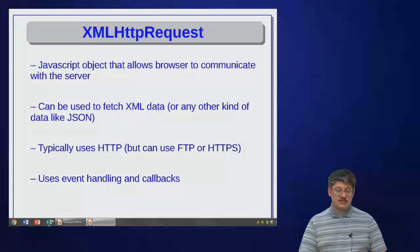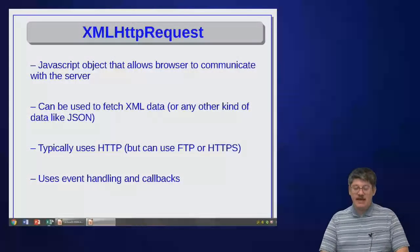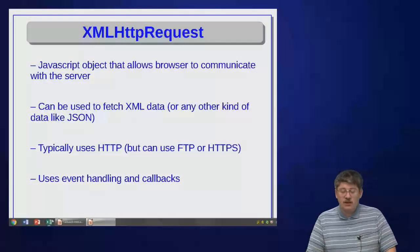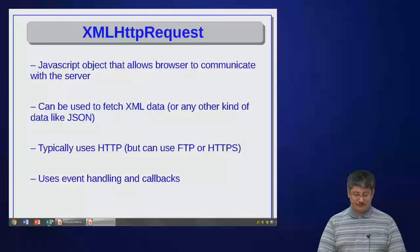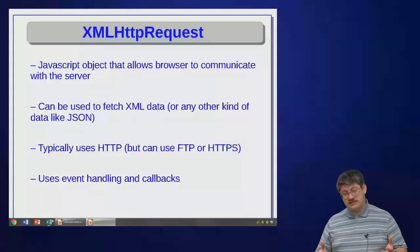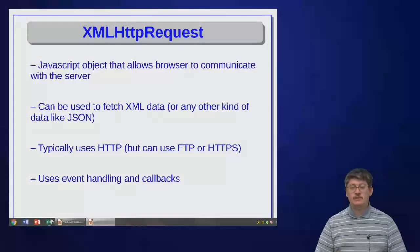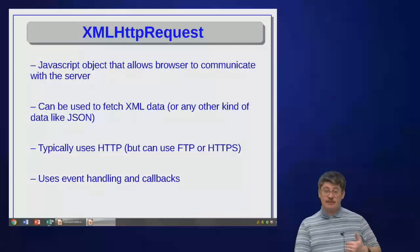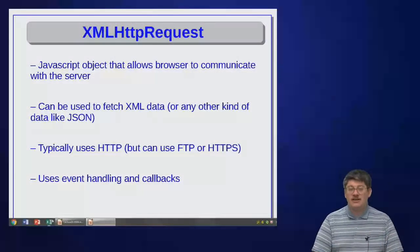The key to all this magic is something called the XMLHttpRequest object. It's important that you capitalize this properly — the XML, H, and R are capital, everything else is lowercase. It's a JavaScript object that allows a browser to communicate with a server. We can use it to fetch XML data or any other kind of data — an image, a text file, or a JSON object from the server. Typically we use HTTP, but we can also use HTTPS or FTP. So even though it's called XMLHttpRequest, we can request things that aren't XML and do it using protocols that aren't HTTP.